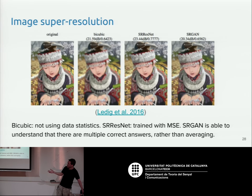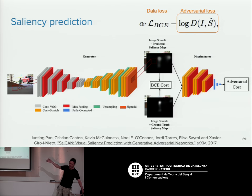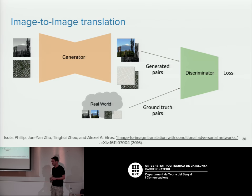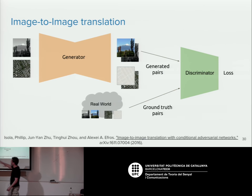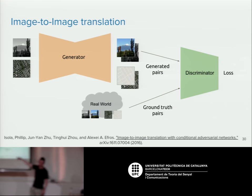Similar ideas have been applied to image super-resolution and saliency prediction, using an adversary to capture higher-level statistics. This was generalized in the famous Pix2Pix paper on image-to-image translation: using an adversarial loss to go from terrain maps to satellite imagery, or black-and-white images to colorized ones, because where L2 loss would just average over all possible colors, the adversary commits to a specific color, giving better-looking results.